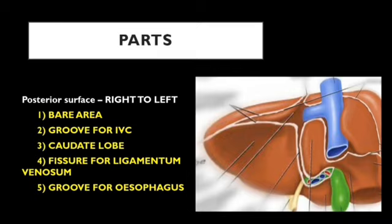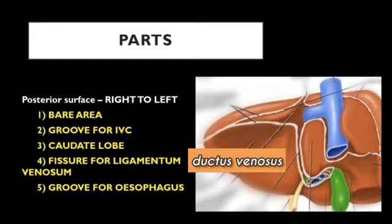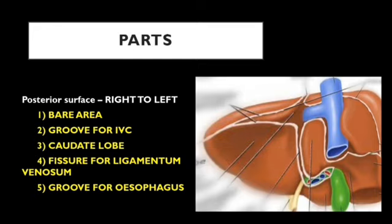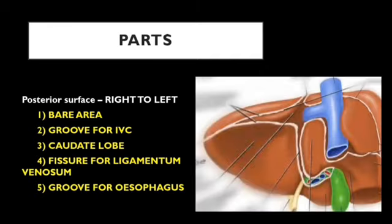Just to the left of the caudate lobe is a fissure or cleft, which has an anterior lip, a posterior lip, and a floor. The floor of this fissure lodges the ligamentum venosum — a connective tissue formed by the obliterated ductus venosus of fetal life. Just to the left of the ligamentum venosum fissure is a faint groove for the esophagus. These are the five areas present in the posterior surface from right to left.